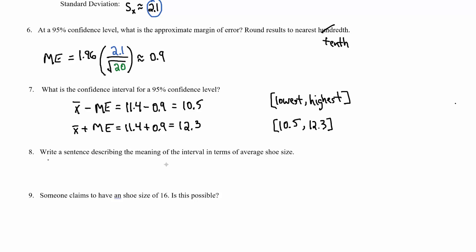And from there it brings us to question 8. We need to write a sentence that describes this interval. And remember we are using a 95% confident interval. So that sentence is going to go a little bit like this: We are 95% confident that the true average shoe size of men that are from 20 years old to 30 years old will range between 10.5 and 12.3.